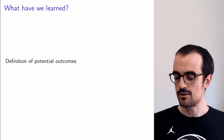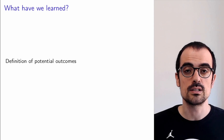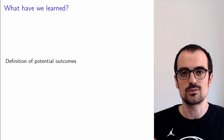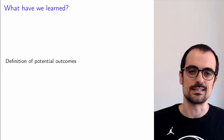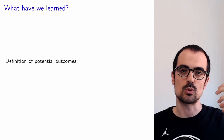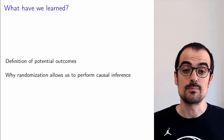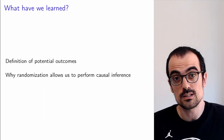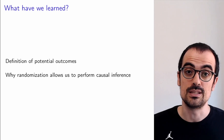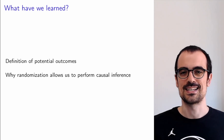To summarize: we learned the definition of potential outcomes, which allow us to describe causal inference probabilistically and rigorously — a causal effect means the two potential outcomes PO(0) and PO(1) are different. We saw why randomization allows us to perform causal inference, and conversely, why without randomization — if there's no guaranteed independence between treatment and potential outcomes — causal inference is very difficult. We will go deeper into that topic in the next video.